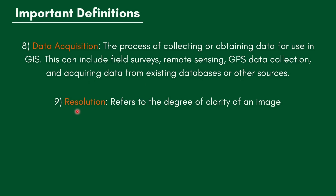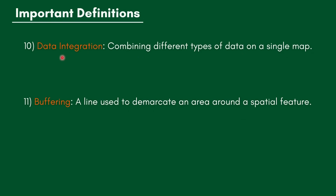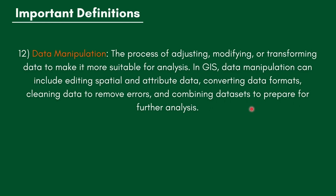Resolution is another common question — it refers to the degree of clarity of an image. Data integration is combining different types of data on a single map. Buffering is a line used to demarcate an area around a spatial feature. Data manipulation is the process of adjusting, modifying, or transforming data to make it more suitable for analysis. In GIS, this can include editing spatial and attribute data, converting data forms, cleaning data to remove errors, and combining datasets.